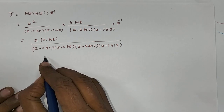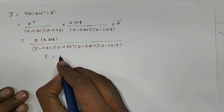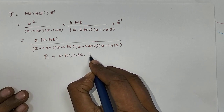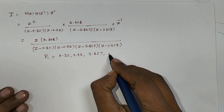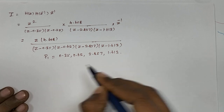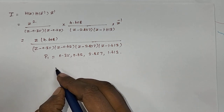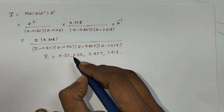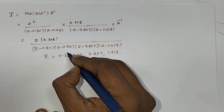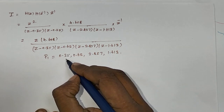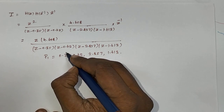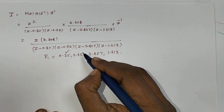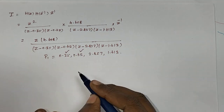The poles are 0.35, 0.62, 2.857, and 1.613. For applying the residuals, you must choose the poles that lie within the unit circle. So the poles to use for the residuals are 0.35 and 0.62.